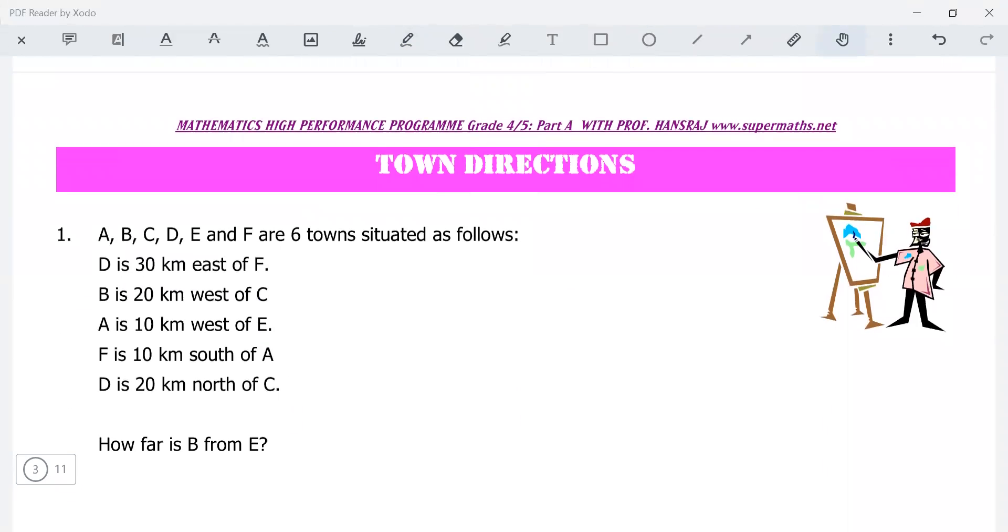Town directions: A, B, C, D, E, and F are six towns situated as follows. I hope you know your north, south, east, and west. That's what's going to help you here. D is 30 kilometers east of F. So if you have F somewhere on the page, D is 30 kilometers east of F, somewhere there.